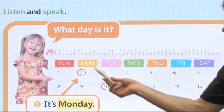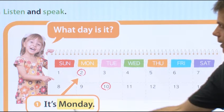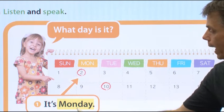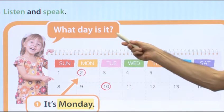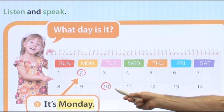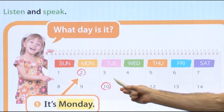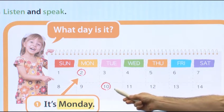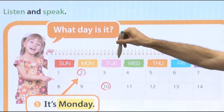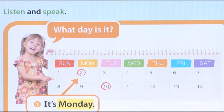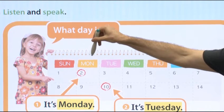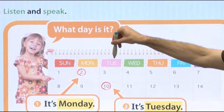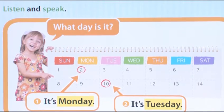It's Monday. Spelling on a calendar: M-O-N. What day is it here? It's Tuesday. Of course — it's Tuesday. Here is Monday, here is Tuesday. It's Tuesday.